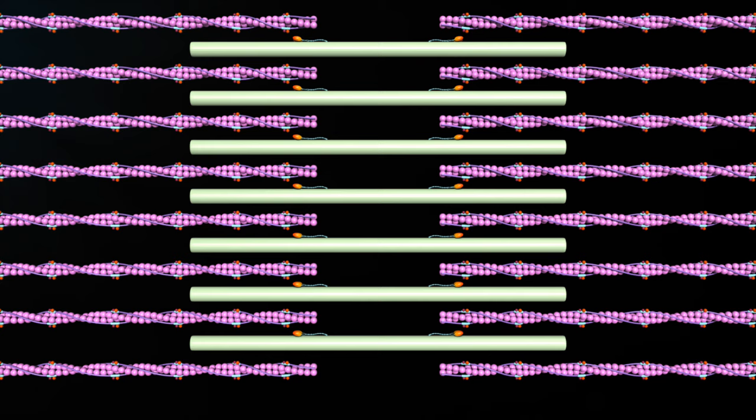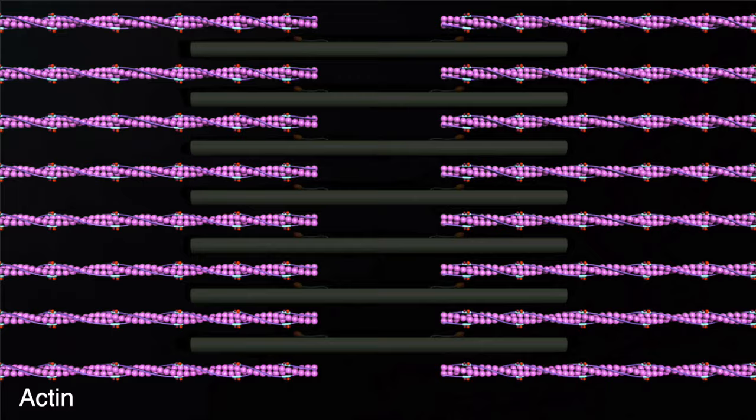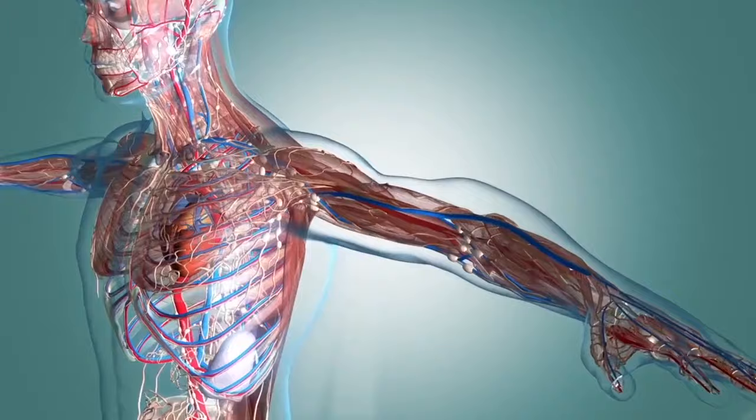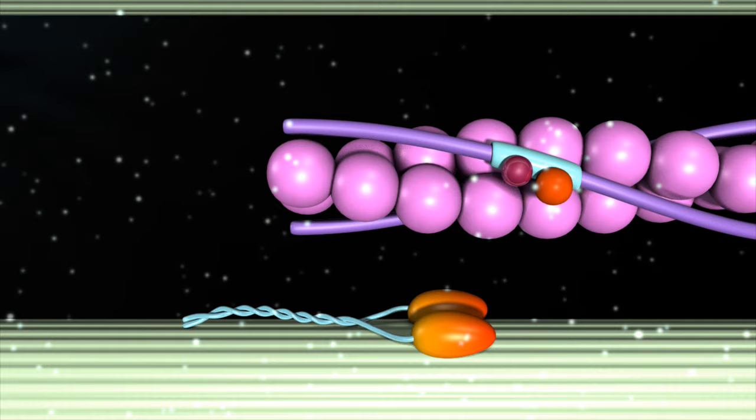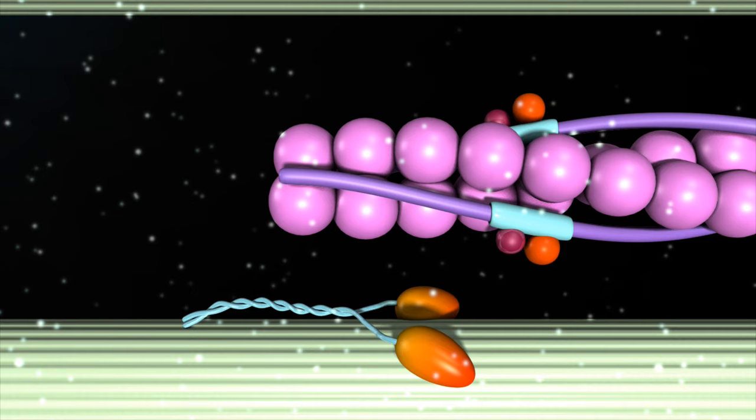If we look at a two-dimensional model of a sarcomere, it consists of actin and myosin. When a nerve impulse arrives at the muscle, it causes a release of a chemical called acetylcholine. The presence of acetylcholine causes depolarization, enabling calcium to be released from the sarcoplasmic reticulum.